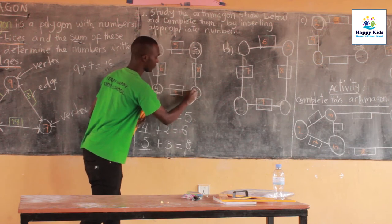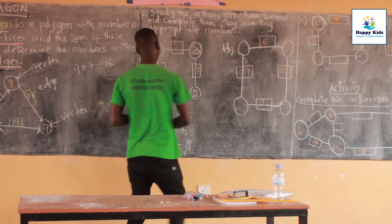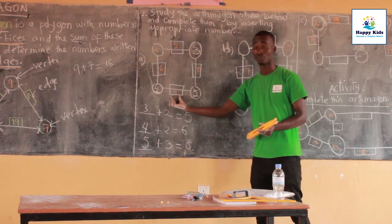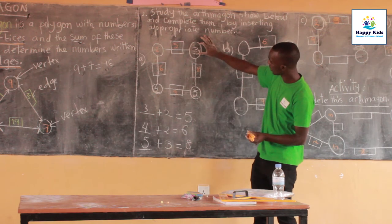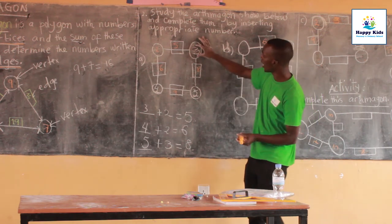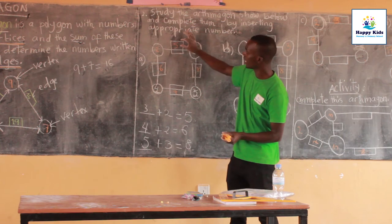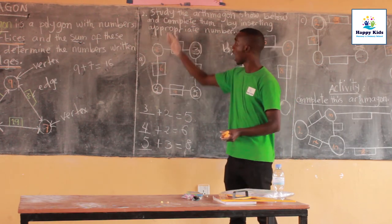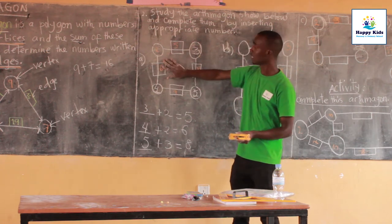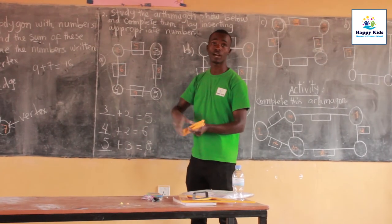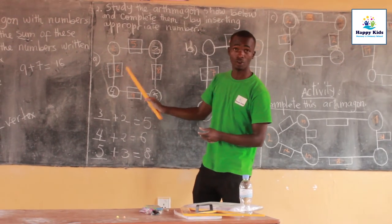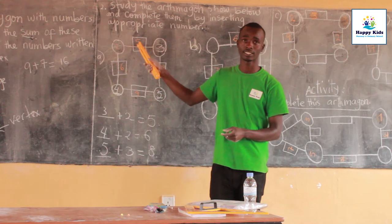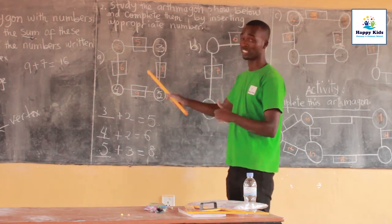As you can see: four plus five gives nine, three plus five gives eight, three plus two gives five, two plus four gives six. Our Alphimagon is complete — by adding numbers which are found in the vertices of the polygon, and the answer is written at each edge of that polygon. Hope you understand this one.